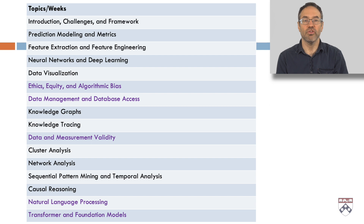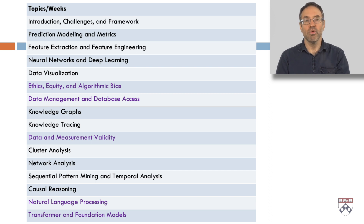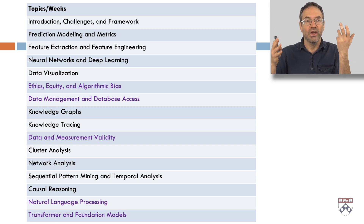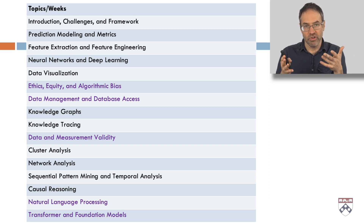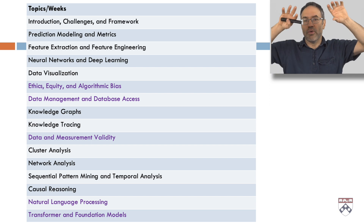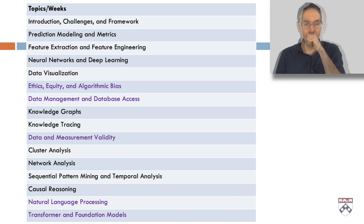We'll continue with data visualization, then an incredibly key topic — ethics, equity, and algorithmic bias. We'll move on to data management and database access, which is really important because most digital learning platforms today store their data in databases and conduct sophisticated management procedures — you'll learn how to get that data out and put it in correctly. We'll then move on to a structure discovery topic: knowledge graphs — how you create knowledge graphs relating skills to each other and refine them based on data.